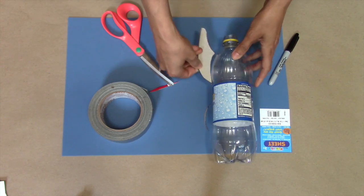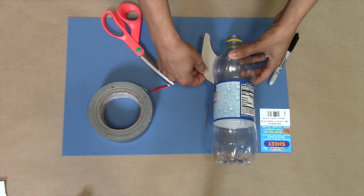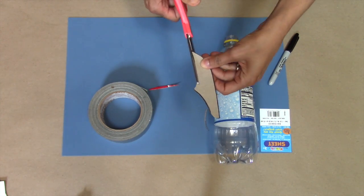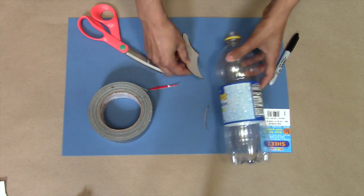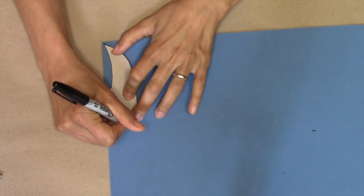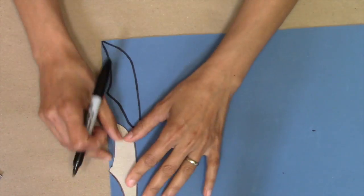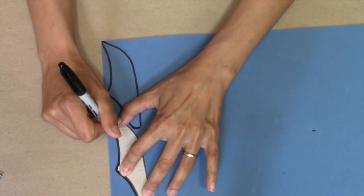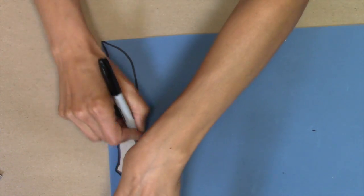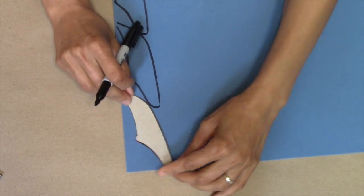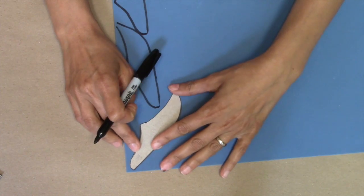Remember, your fin should go near the mouth of the bottle, not on the other end. Now you can use this as a template to cut out the fins. To try out something a little different, I'm using a craft foam sheet to make my fins and nose cone, but the cereal box cardboard would work great for this design too.